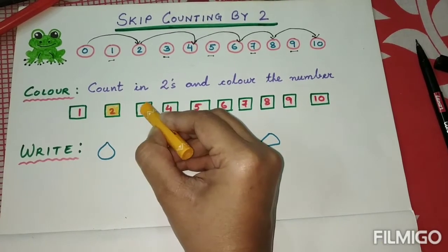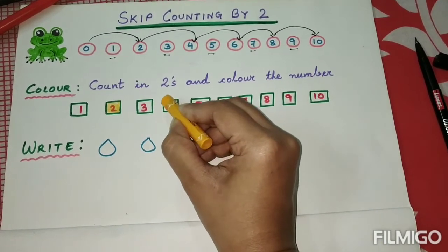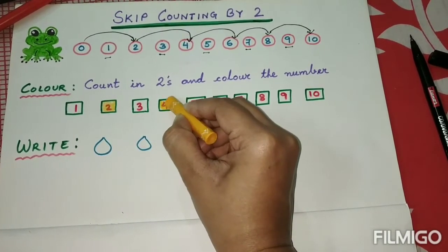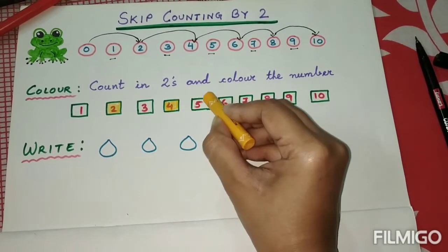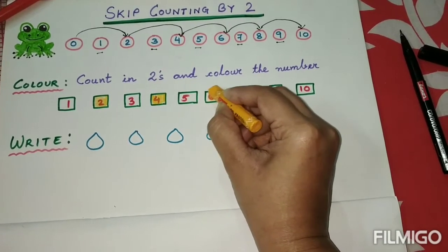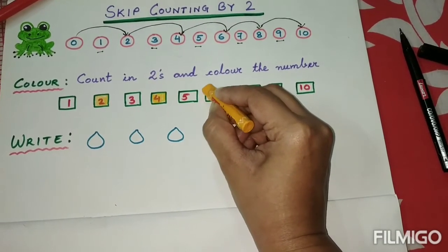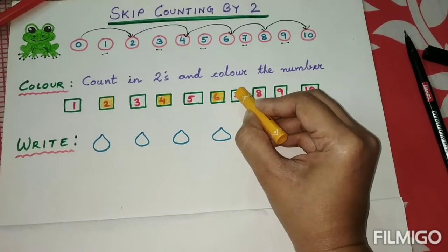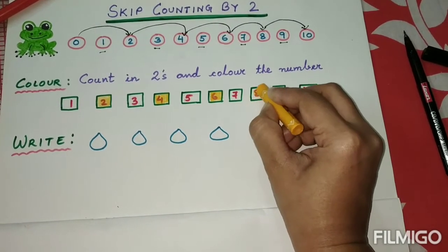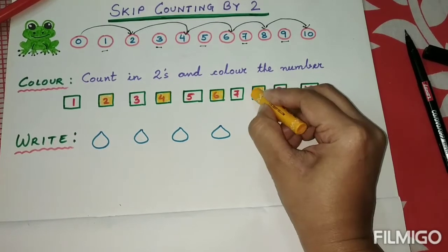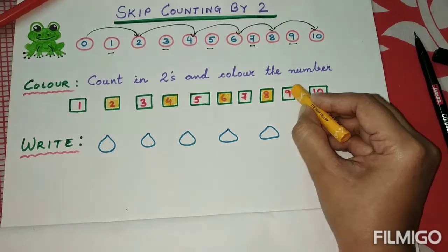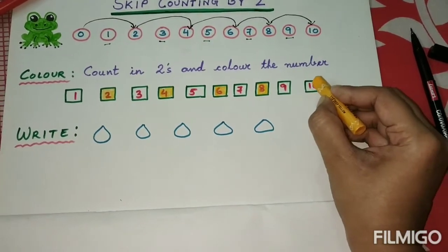Next we will skip three and go to number four and color it. Then we will skip five and move to number six and color it. Then we will skip number seven and move to number eight and color it. Then we will skip number nine and jump to number ten and color it.